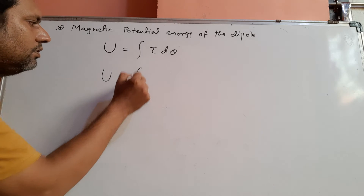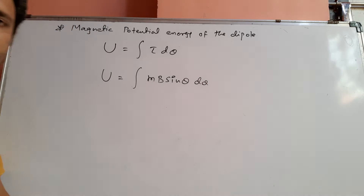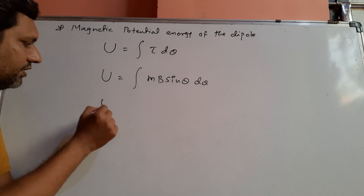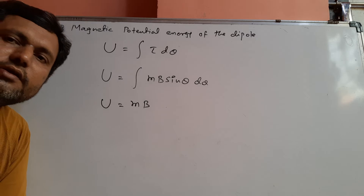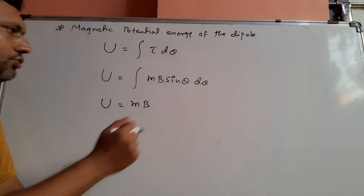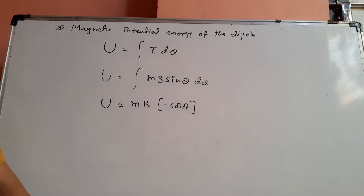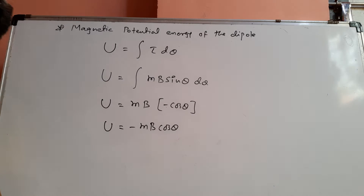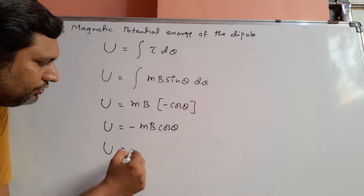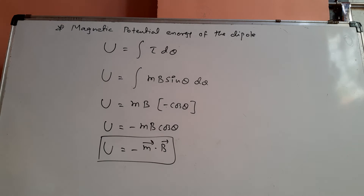The formula of torque is MB sin theta d-theta. M and B are both constant because B is a uniform magnetic field and M is the magnetic moment of the given dipole, so it is constant. The integration of sin theta is minus cos theta. So finally U equals MB cos theta, and we can write this as U equals minus M dot B, expressing both vector quantities in the form of a dot product.